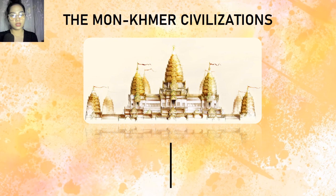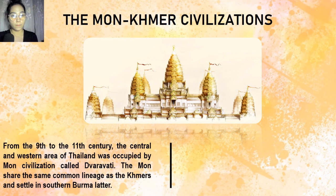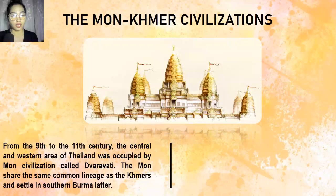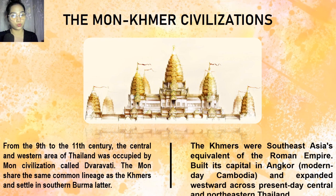The Mon shared the same common lineage as the Khmers and settled in southern Burma. By the 11th to 12th centuries, Mon influence over central Thailand waned. The Khmers, on the other hand, were Southeast Asia's equivalent to the Roman Empire. They established the Khmer kingdom in the 9th century, built its capital in Angkor — now Cambodia — and expanded westward across present-day central and northeastern Thailand.